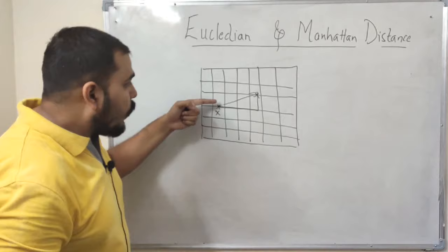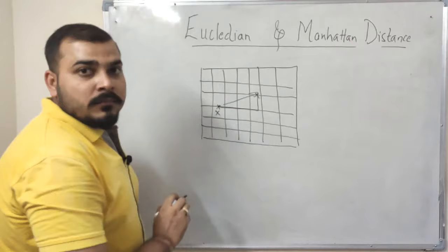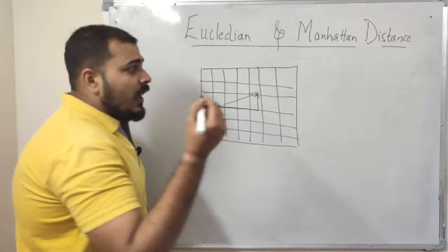Instead the distance will get calculated somewhere like this, because the road over here—you can see these are not buildings, right? It cannot just cross the building directly. Instead it will follow a pattern which is basically called as Manhattan distance by following the road pattern like this.